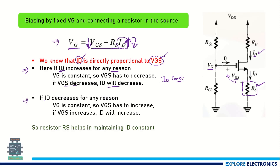In the second case, if ID decreases for any reason, in the expression VGS + RS·ID = VG, if ID decreases, VGS will increase to compensate and maintain VG. If VGS increases, ID will increase again and become constant. So RS helps keep ID constant, and this eliminates the problem seen with biasing by fixing VGS.